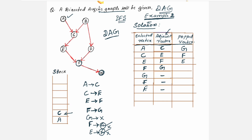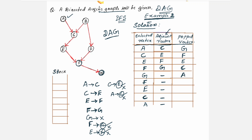The stack pointer is now pointing to C. Check which are the neighbors for C — you have only one neighbor, E, which is already visited. So no more neighbors for C; you need to pop it out and place it in the popped vertex column. The stack pointer is now pointing to vertex A. Check the neighbors: for A, you have only one neighbor, C, which is already visited. So no more neighbors for A; A needs to be popped out. If A, C, E, F, G were the only vertices in the graph, by this time we would have got the topological sorting.